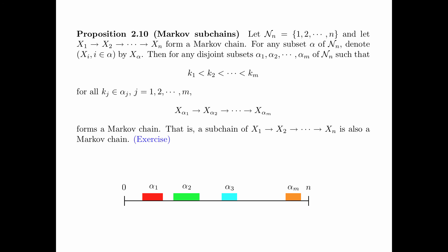The condition that the disjoint subsets alpha_1, alpha_2, ..., alpha_m need to satisfy is illustrated in this figure. If this condition is satisfied, then we have the Markov chain x_{alpha_1}, x_{alpha_2}, ..., x_{alpha_m}.